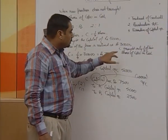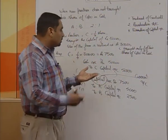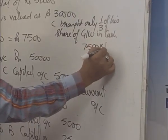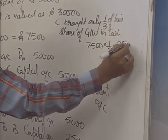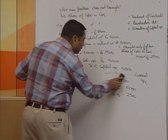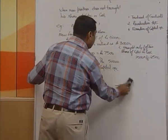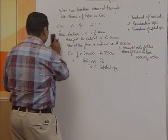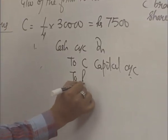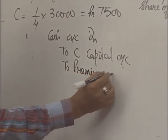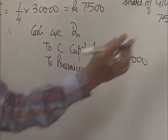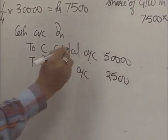As the question says, C brings only one-third of goodwill in cash. One-third of 7,500 is rupees 2,500. So 2,500 is the amount of cash brought by C as goodwill, and he was not able to bring the rest, which is 5,000.